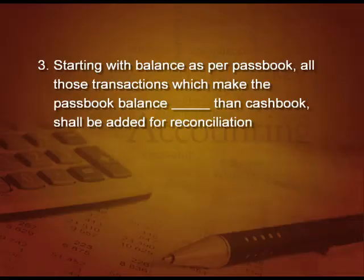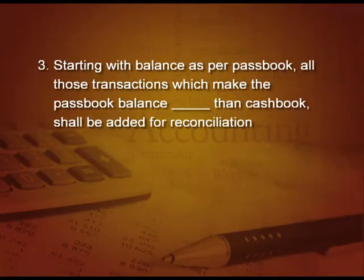Next one, starting with the balance as per pass book: all those transactions which make the pass book balance lower than the cash book will be added for reconciliation. We add those things which make it lower, so the answer is pass book balance is lower than the cash book — only then it will be added.